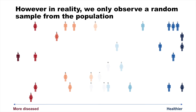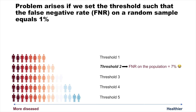However, in reality, we only observe a random sample of people from the population — for example, the patients with medical records. Doctors need to decide a diagnosis threshold based on these patients. A simple and intuitive approach is to set the threshold such that the false negative rate among these patients is under 1%. This approach will give us threshold 2,